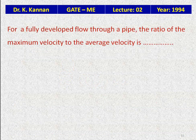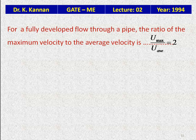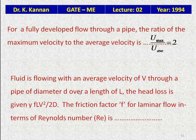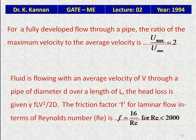For fully developed flow through a pipe, the ratio of maximum velocity to average velocity is equal to 2. For a fluid with average velocity V through a pipe of diameter D over length L, the head loss is given by FL·V²/2D. The friction factor F for laminar flow (Re < 2000) is F = 16/Re.